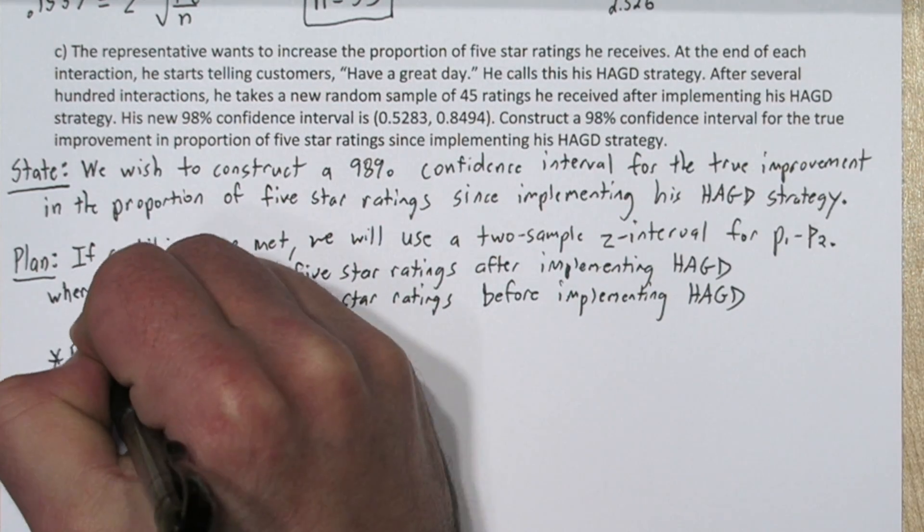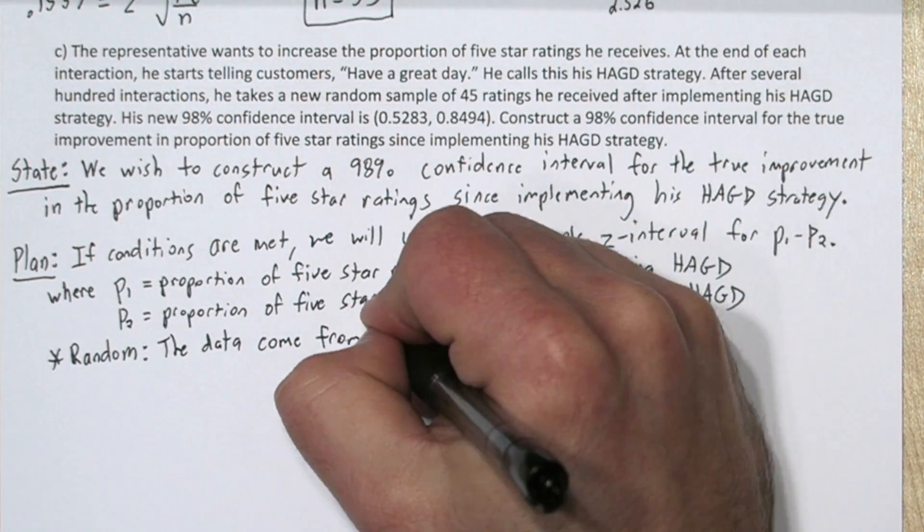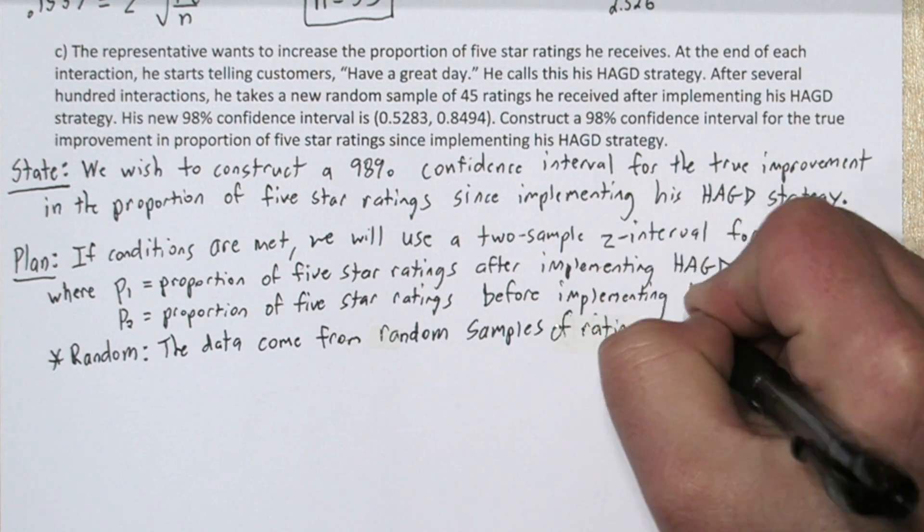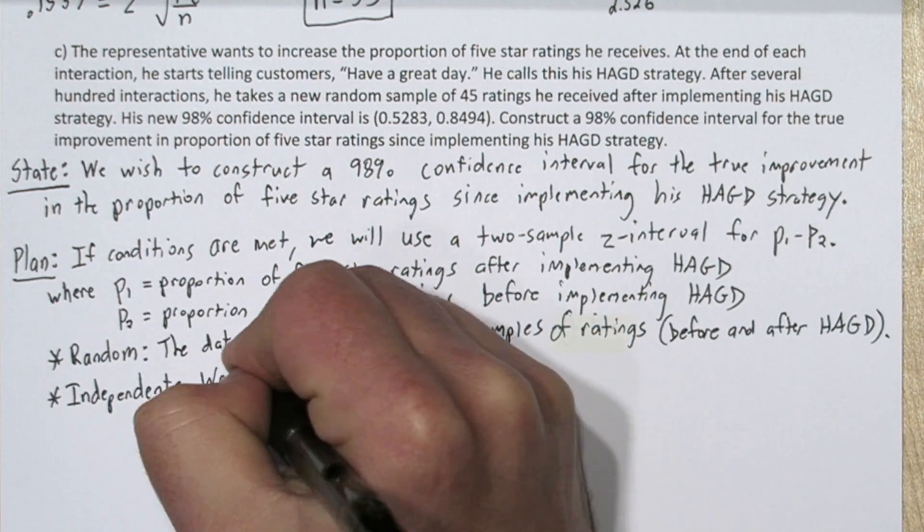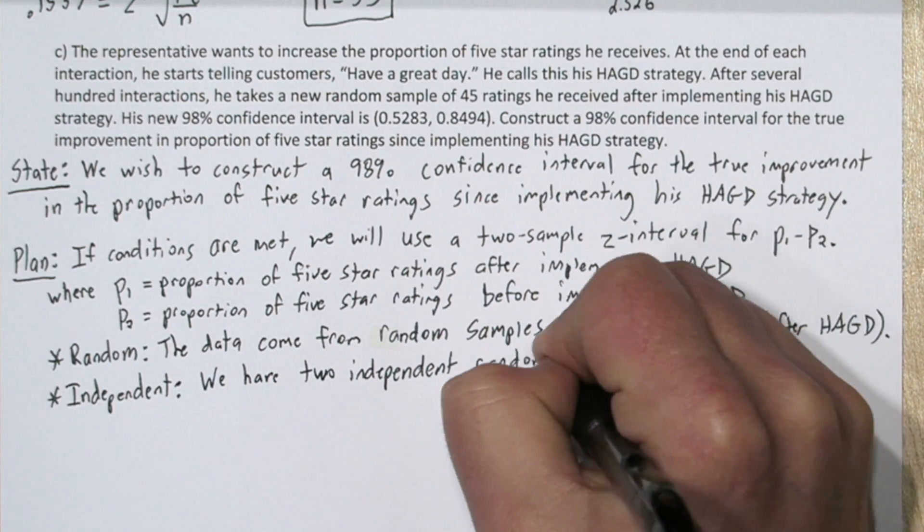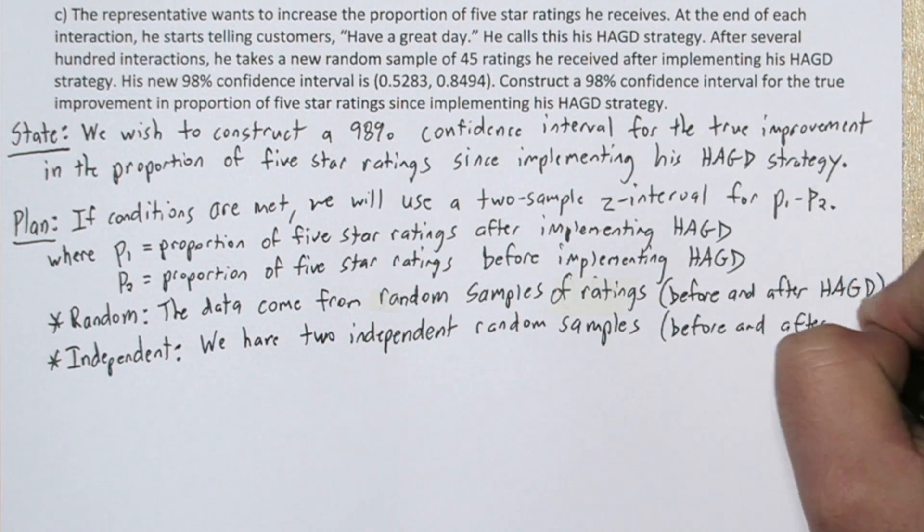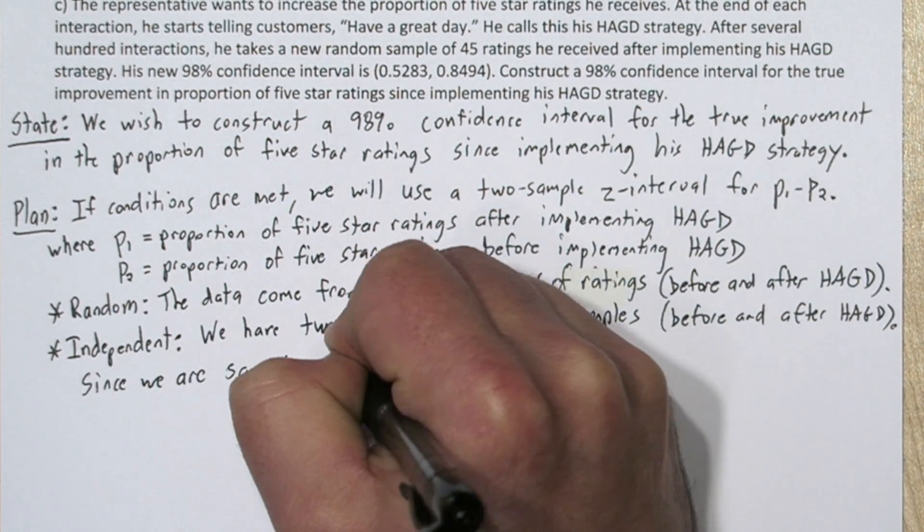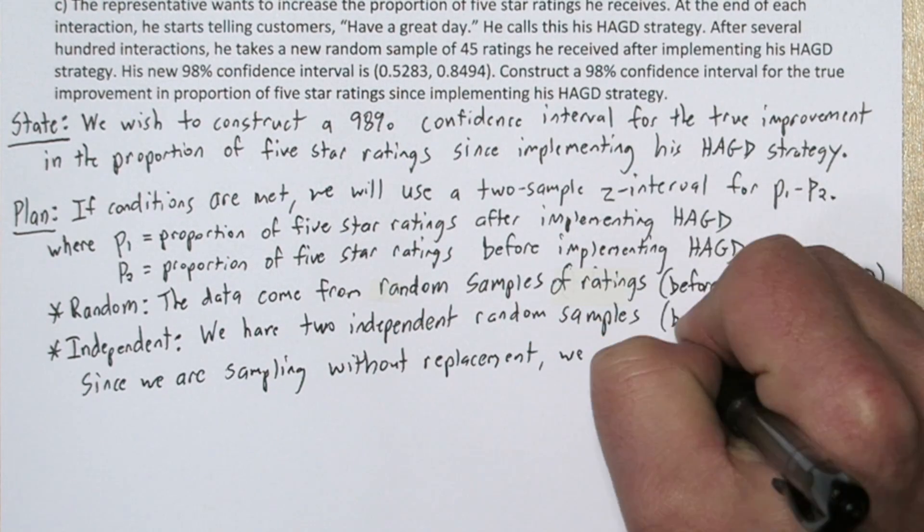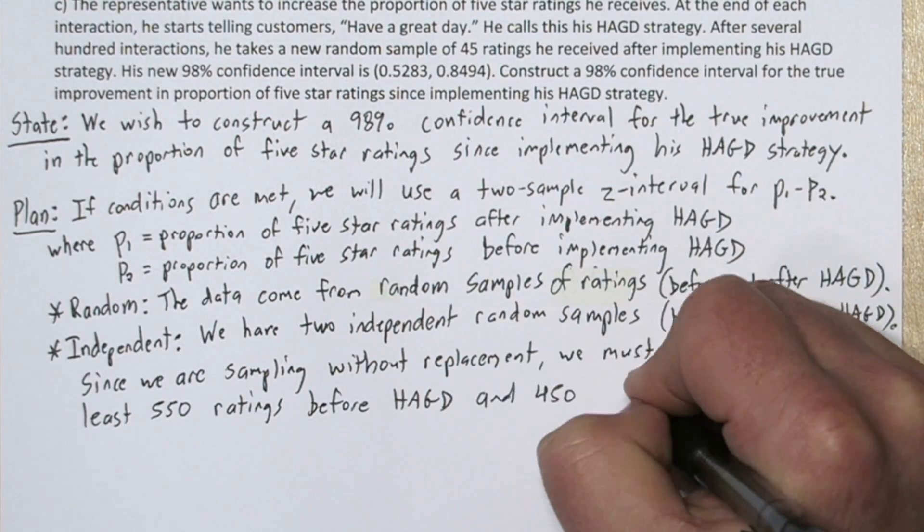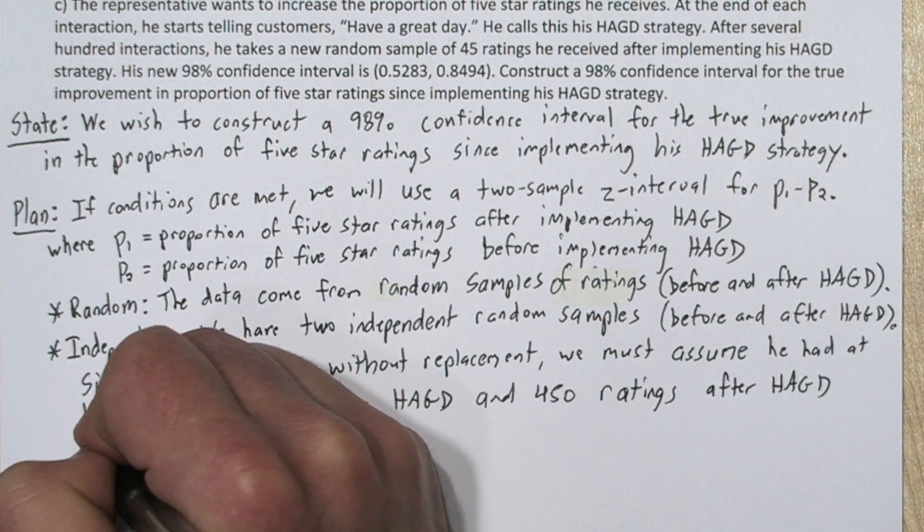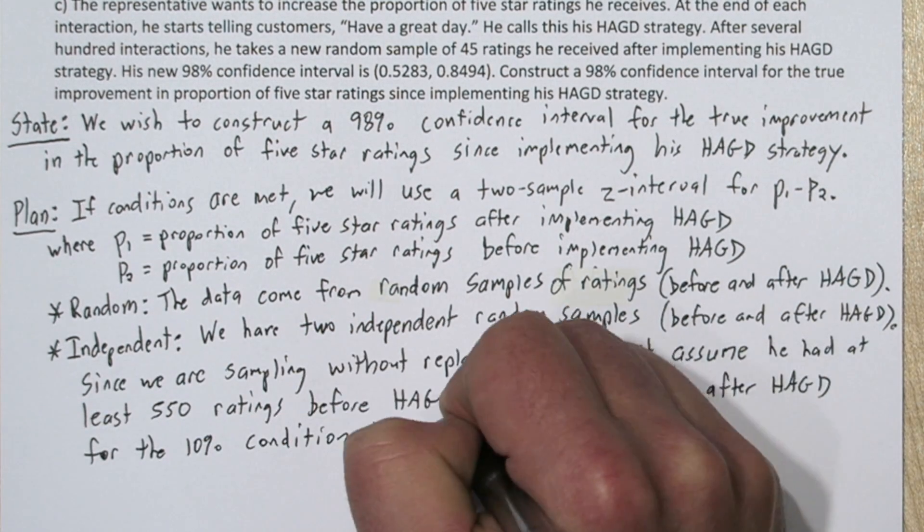Now since the data come from random samples of ratings before and after his have a great day strategy, the random condition is met. For the independent condition, we have two independent random samples, before and after have a great day. Since we are sampling without replacement however, we must assume he had at least 550 ratings before have a great day, and 450 ratings after have a great day, for the 10% condition to be met.